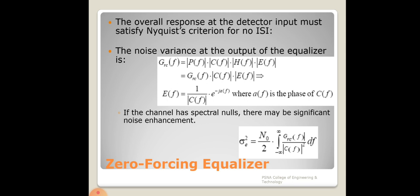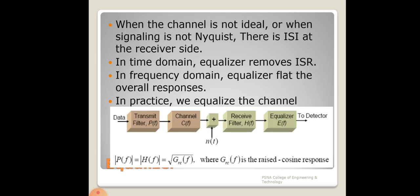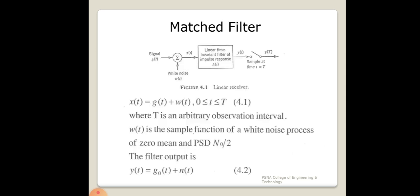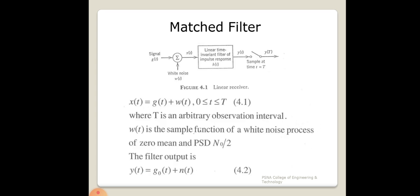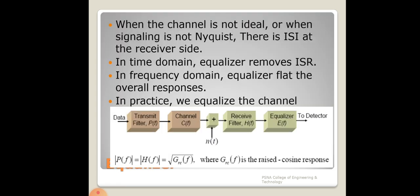The equalizer function e(f) is the inverse of the channel function c(f), where e^(−j·a·f) represents the phase of the channel filter function. This is called the zero-forcing equalizer — a linear time-invariant system. Its transfer function is 1 / [c(f) · e^(−j·a(f))], where the phase of c(f) is included.